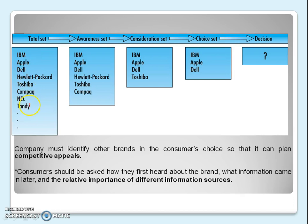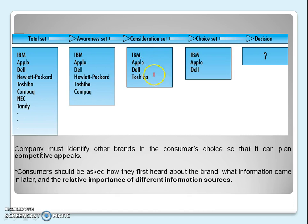Now suppose you want to buy a computer. All the brands available in the market together are known as the total set. From these, you are only aware of about six brands — those six form your awareness set. After collecting information about those six brands, you find only four are fulfilling your needs, and these four brands frame your consideration set.